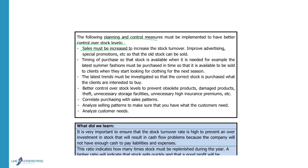This can be done by improving advertising and having special promotions, for example two for the price of one, or having annual sales so that all old stock can be sold. For example, Woolworths at the end of every season holds a sale to sell all the stock purchased for that season, clearing the store to get immediate cash flow so they can buy new stock for the next season.